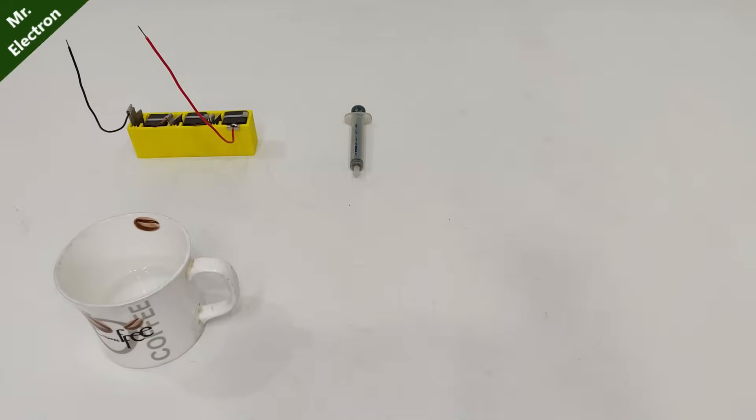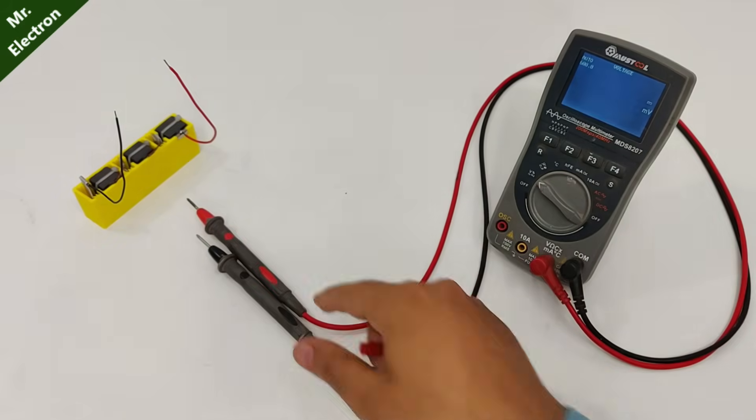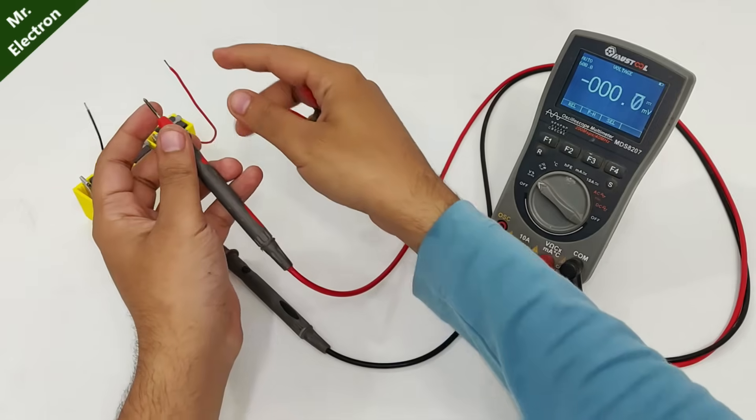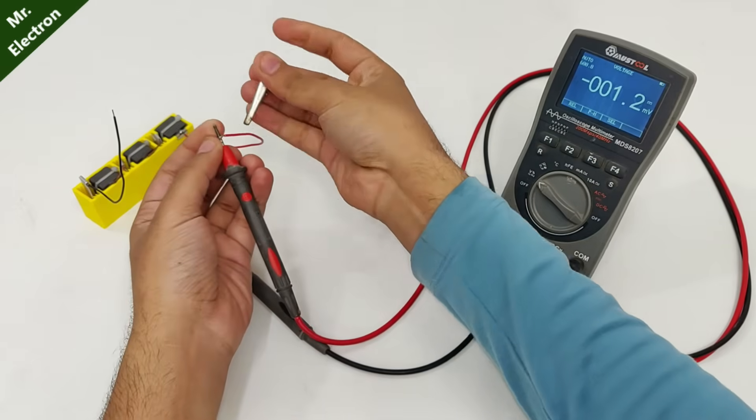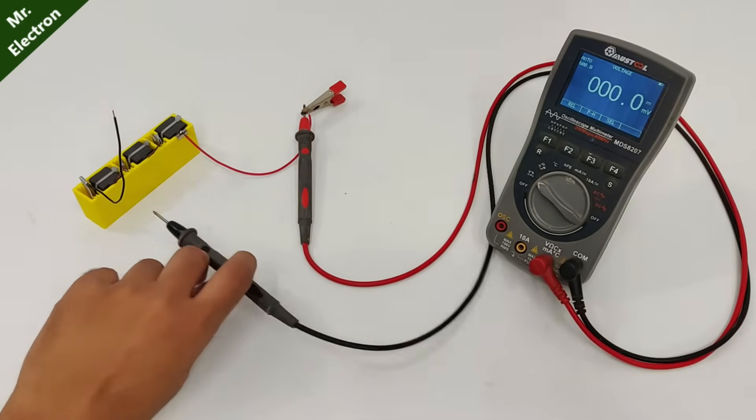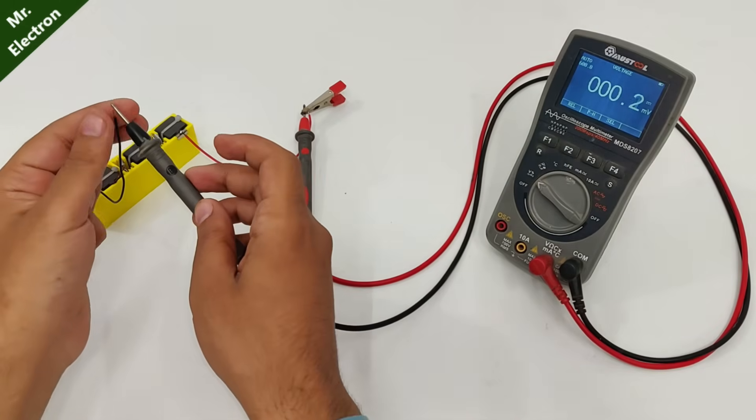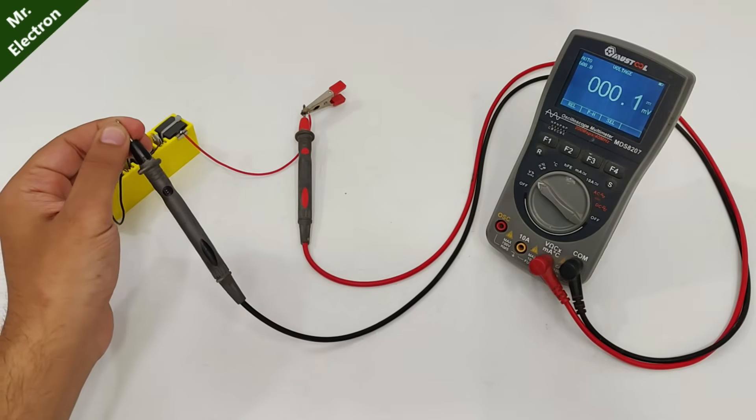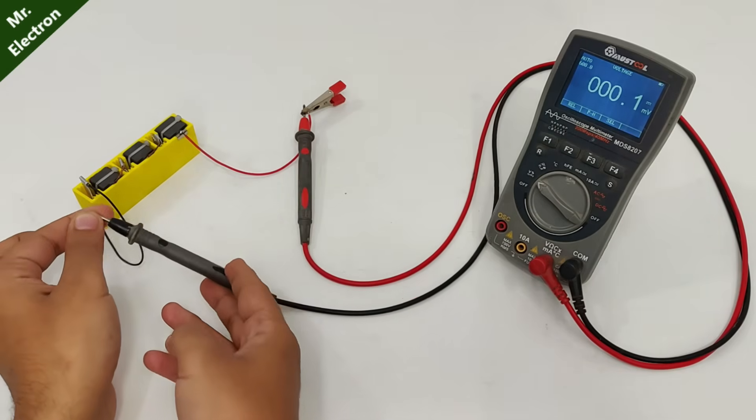Time to connect the multimeter for measuring voltage. Here I'm going to use this red wire, positive. So that's connected. And if I touch it here like this, you see 0 volts. It is time to fill in the electrolyte now.